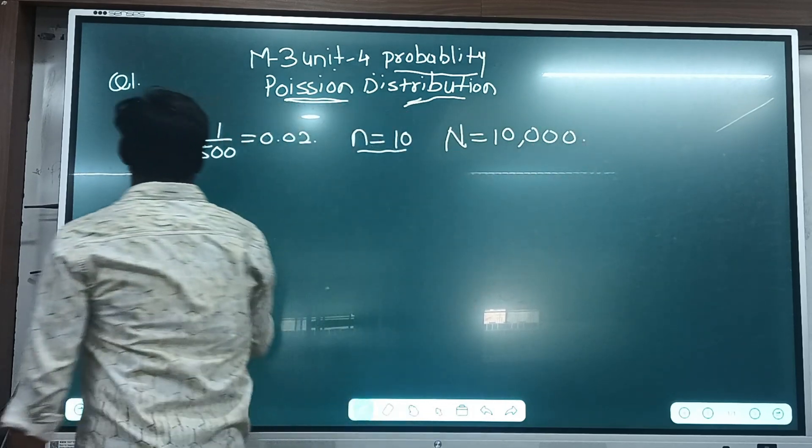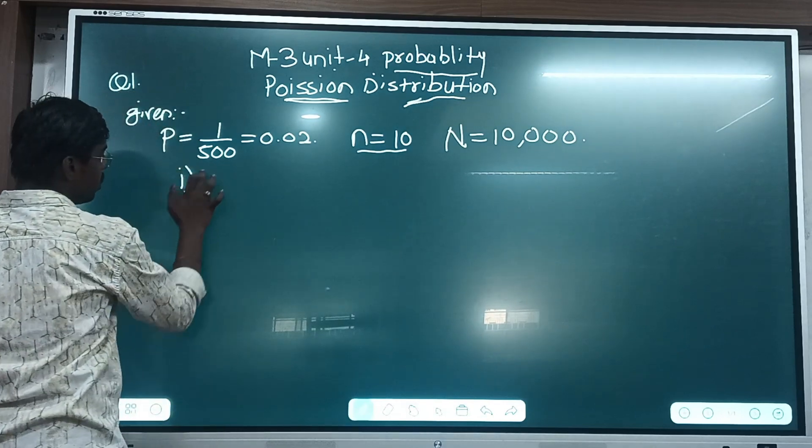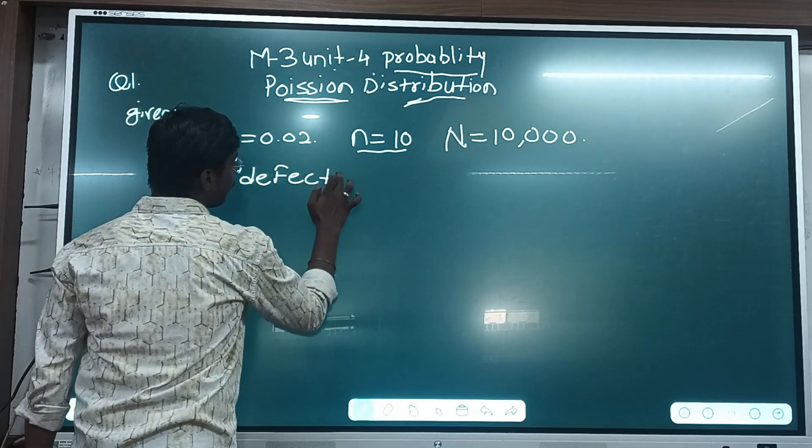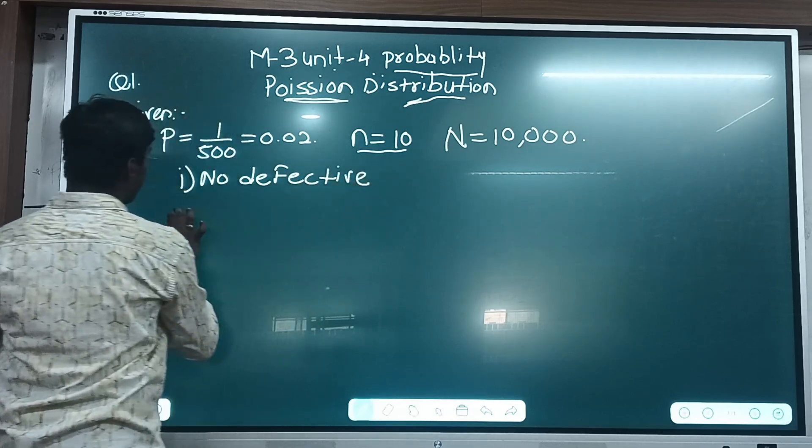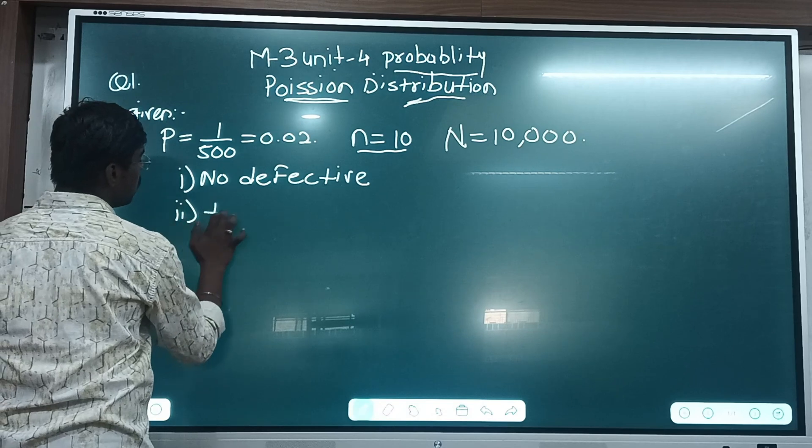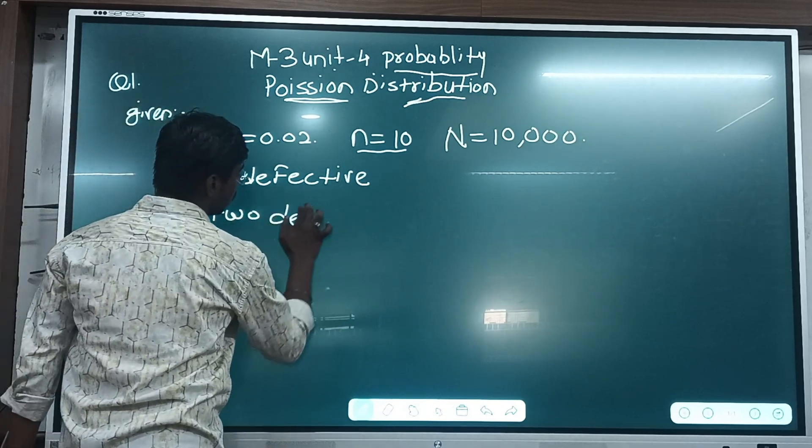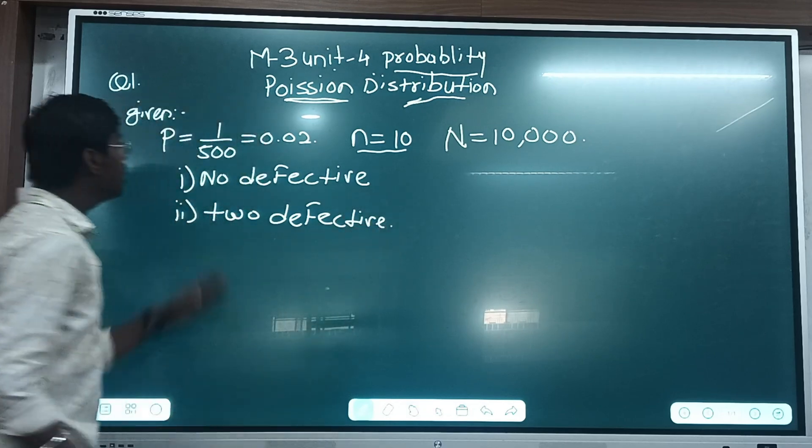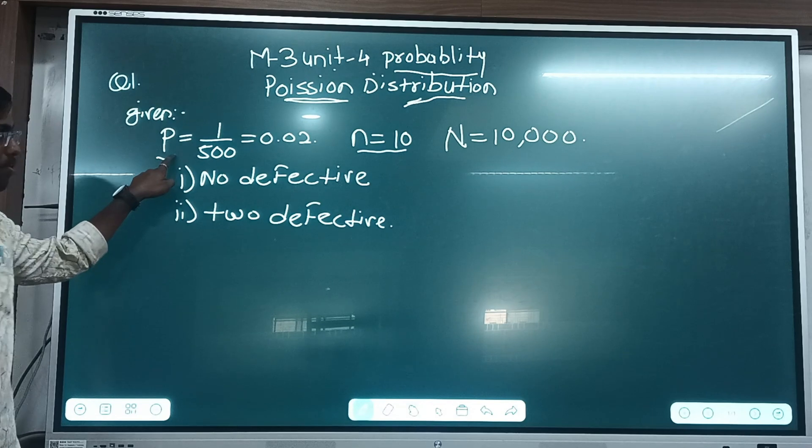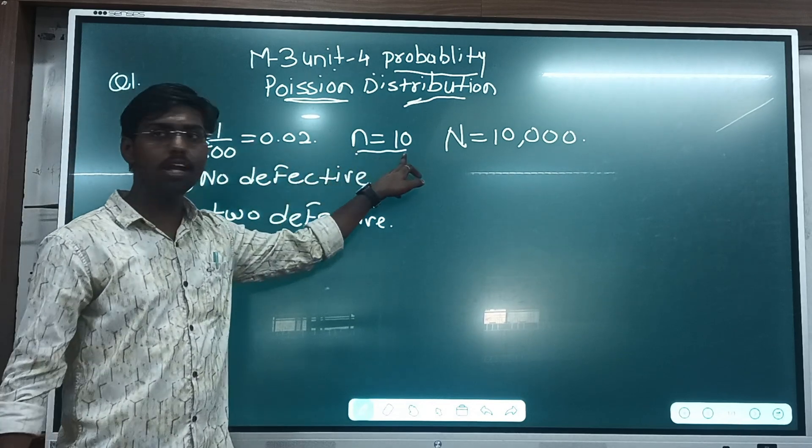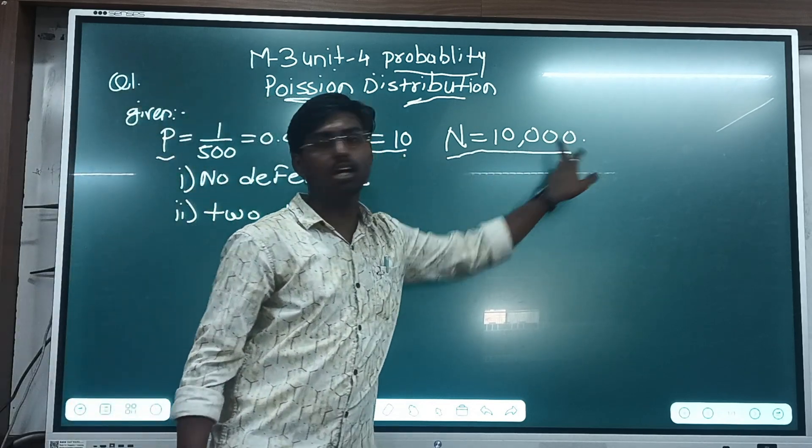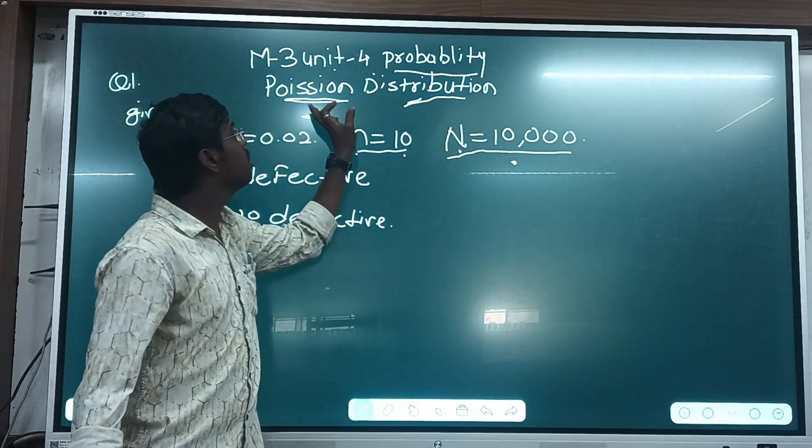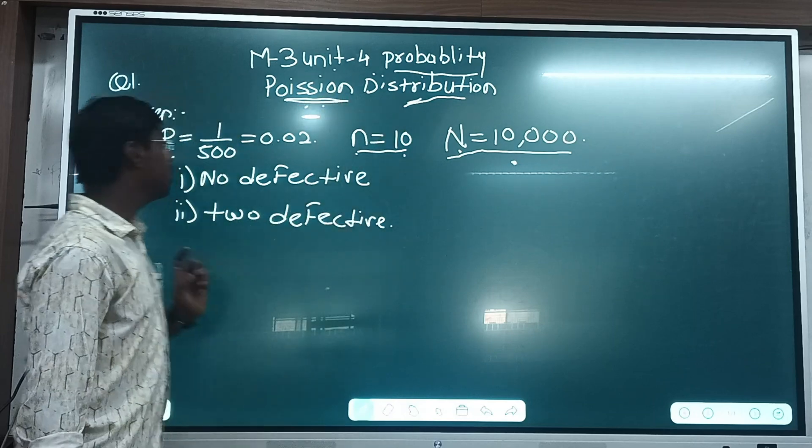They are asked about no defective. First condition given is no defective. And second condition is two defective. So in this question, this is the given data: p is the probability of success, n is 10, and the number of packages are 10,000. Suppose the n is large, then it is Poisson's distribution. Remember.